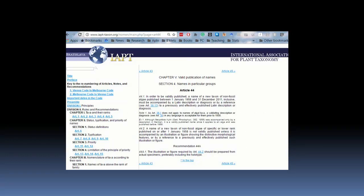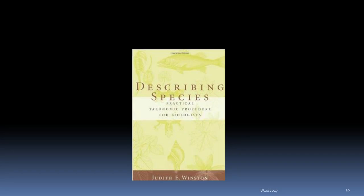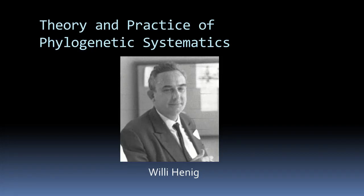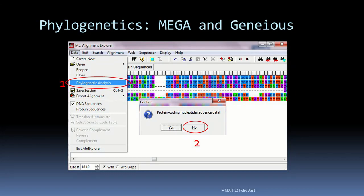Then comes IAPT and ICN articles along with some case studies, because this group is pertinent to law — these are actually something like the law of taxonomy. We will explain how to use dichotomous plant identification keys, as well as how to prepare herbarium vouchers and how to preserve samples for molecular systematic studies. Then I will explain how to describe a new plant species, and then we will come to the theory and practice of phylogenetic systematics, different methods for DNA sequencing, and sequence analysis — including alignments, consensus sequence generation, and contig assembly.